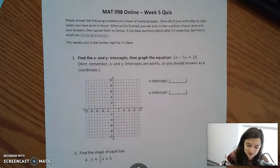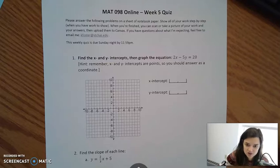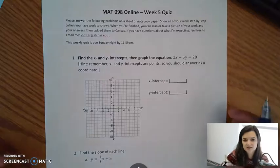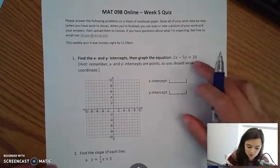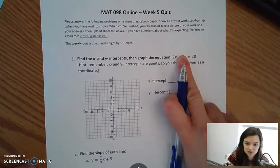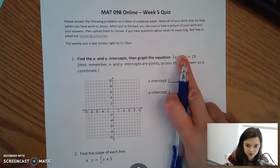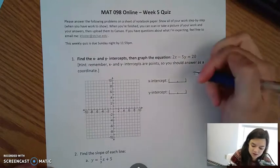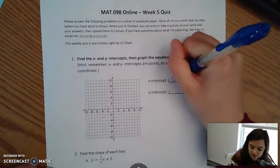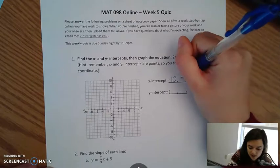So to find the x intercept, the x intercept happens when our line crosses the x axis. The line crosses the x axis when y is 0. So if y is 0, that means that 2x equals 20, which means x would be 10. So our x intercept happens when x is 10 and y is 0.